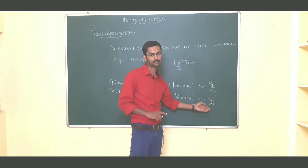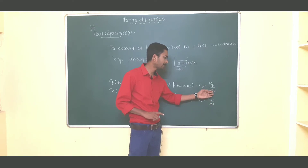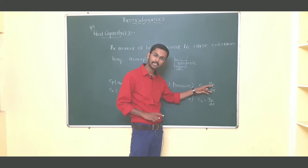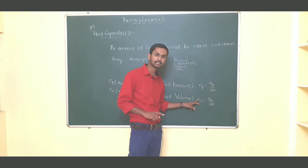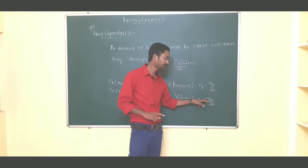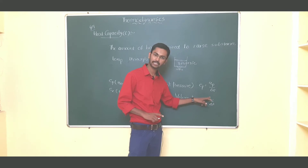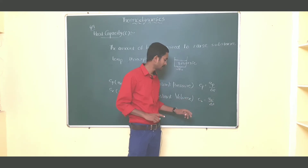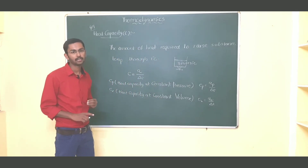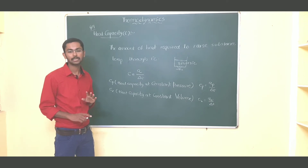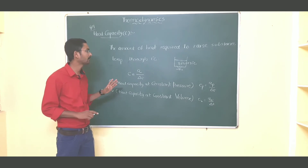So Cp = qp / ΔT and Cv = qv / ΔT. Cp represents the heat absorbed by the system at constant pressure, and Cv represents the heat absorbed by the system at constant volume. There is an important relation between Cp and Cv, and the derivation of this relation carries the most important weightage in our question.